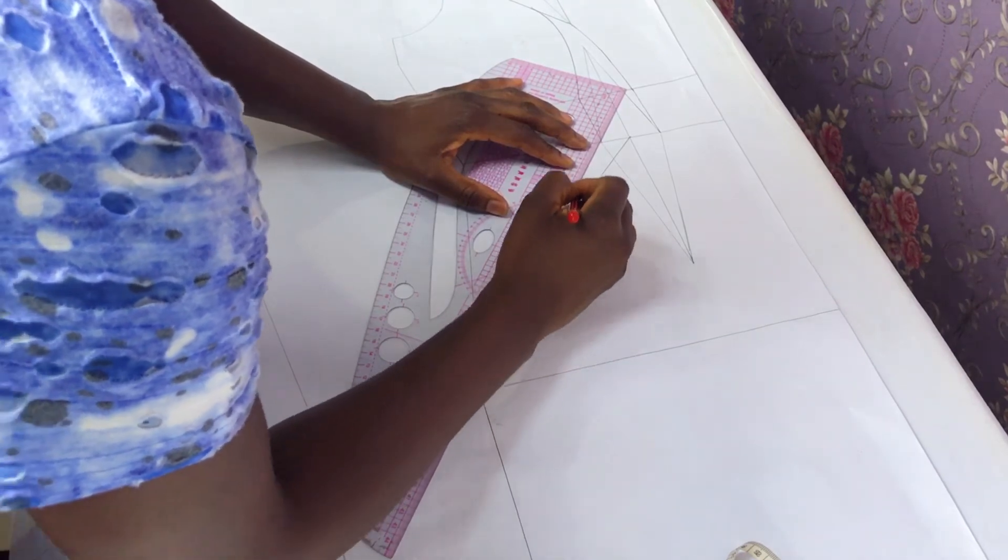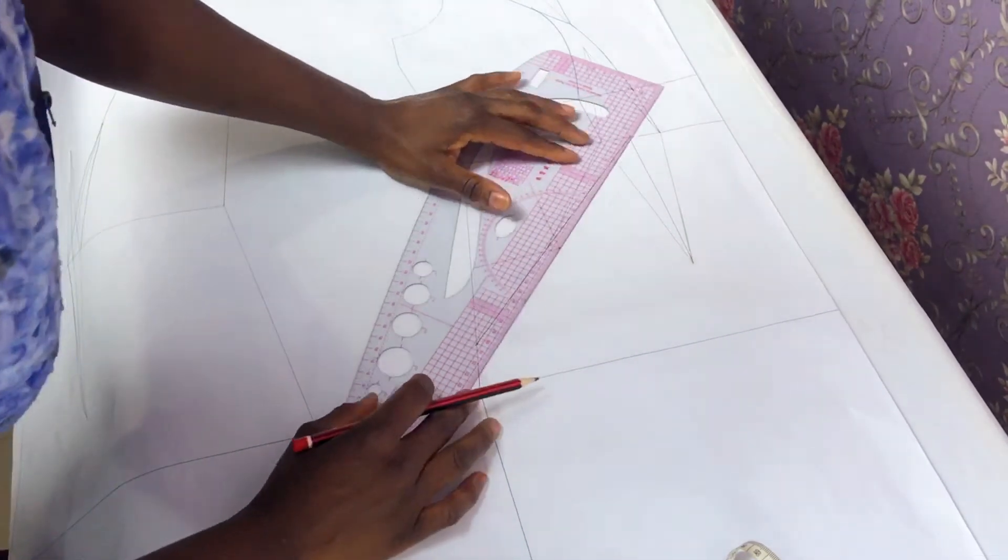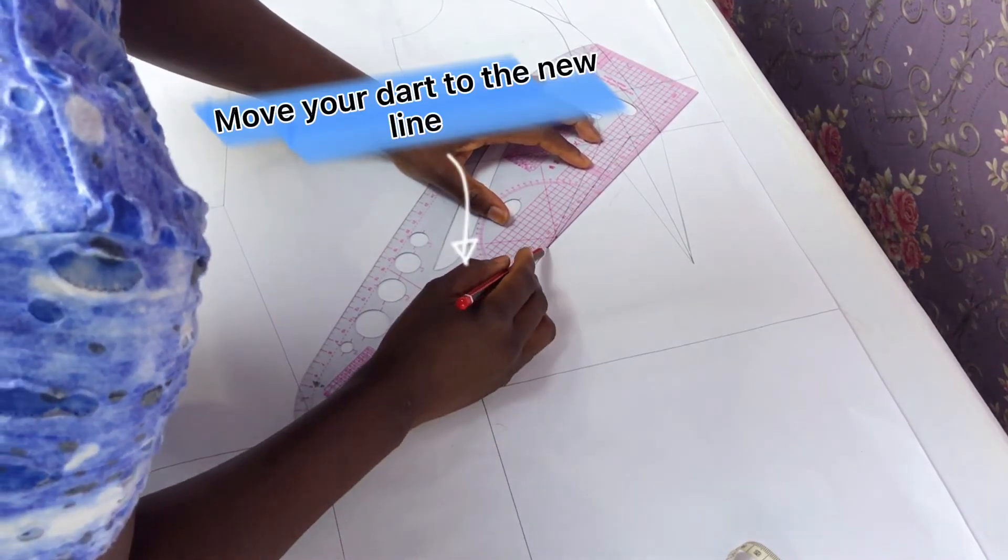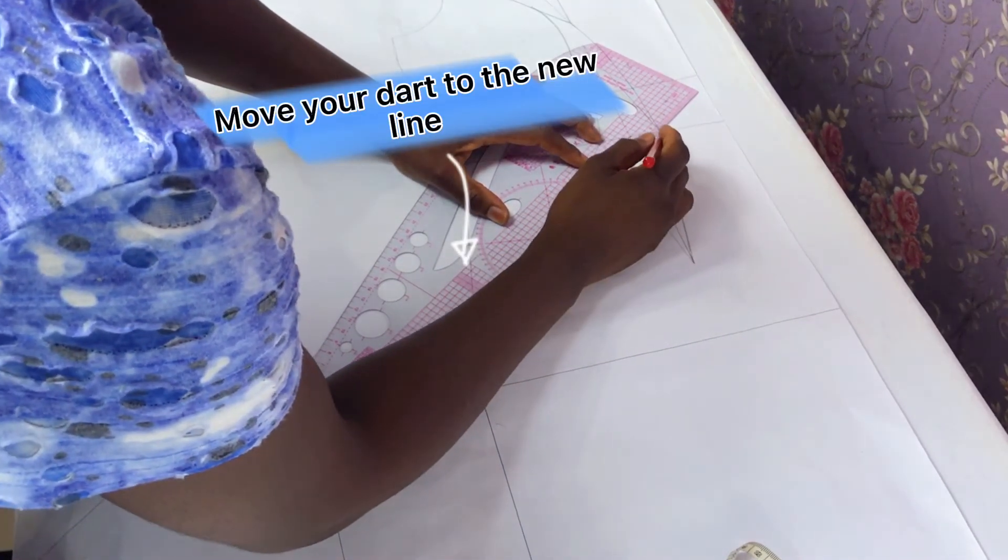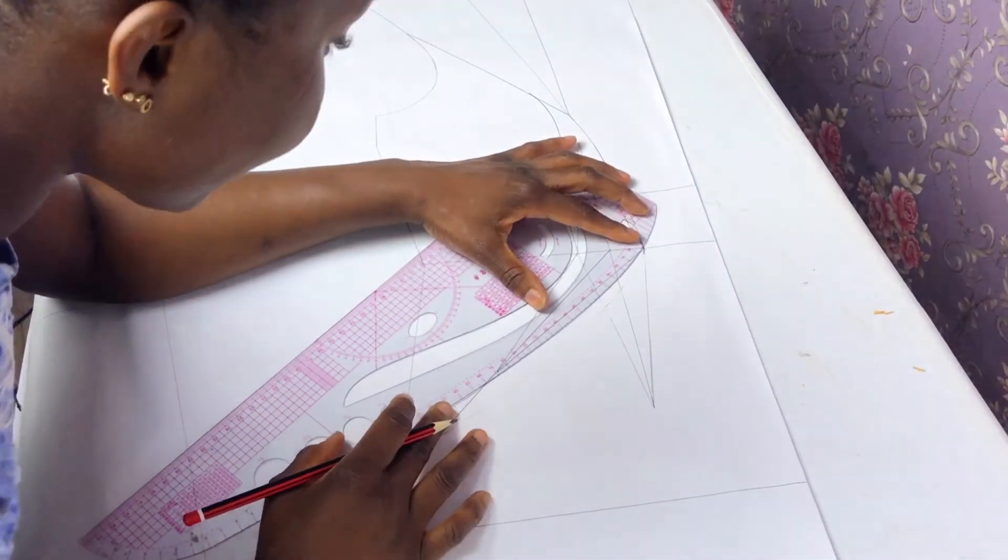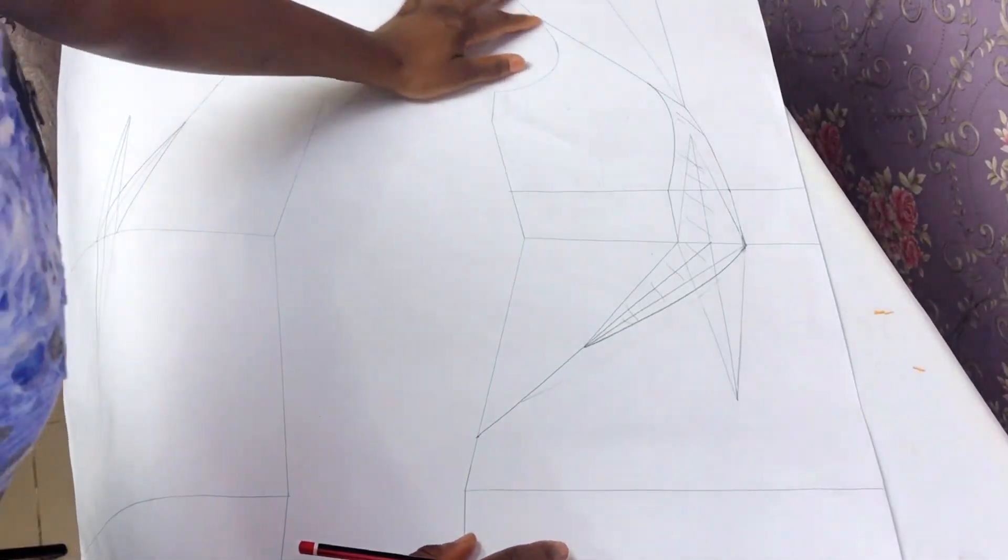I ruled from the mid dart leg to that 1.5 inch mark and just like I did for the back bodice, I moved my waist dart to this line. Then I blended all the pointy edges.